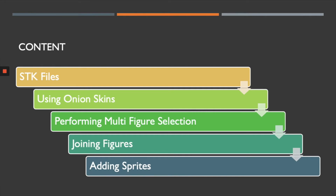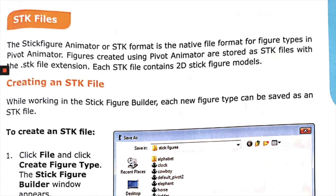SDK files: The Stick Figure Animator, or SDK format, is the native file format for figure types in Pivot Animator. If you want to save a figure in Pivot Animator, you have to save it in the SDK format. Figures created using Pivot Animator are stored as SDK files with the dot-SDK file extension. Each SDK file contains 2D stick figure models.